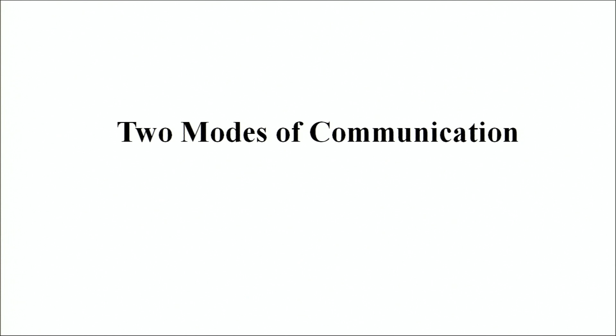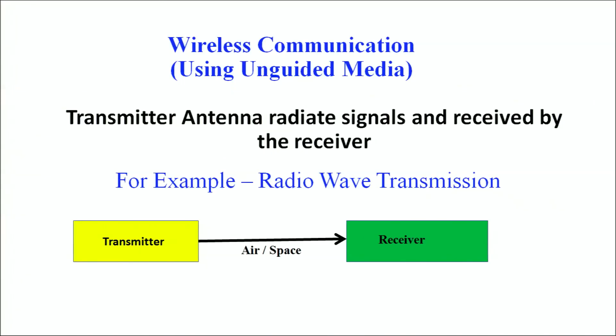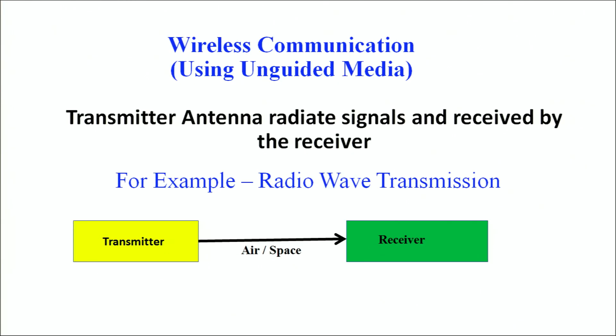Whenever we talk about communication, we see that communication systems can be broadly put into two categories. The first one being a wireline communication system, where with the help of a guided media, we are able to transmit the signal through a connecting wire between one end and the other. The other kind is the wireless communication system, which makes use of an unguided medium, primarily air or space, where the transmitter radiates the signal and it is received by the receiver. Radio wave transmission is one common example of wireless communication, meaning no wire is needed in between.